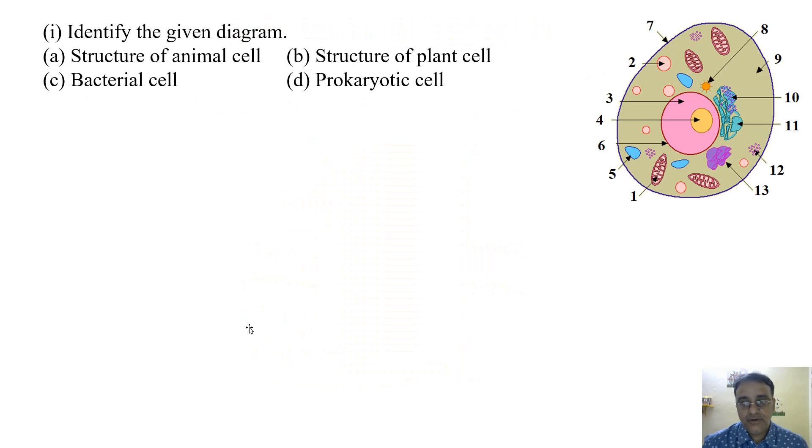Based on this diagram, the first question is identify the given diagram. Options are: structure of animal cell, structure of plant cell, bacterial cell, or prokaryotic cell. The correct answer is (a) structure of animal cell.